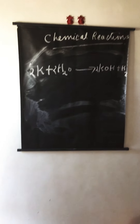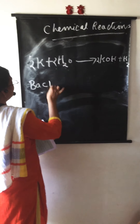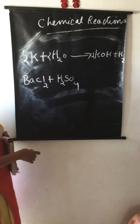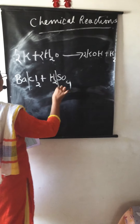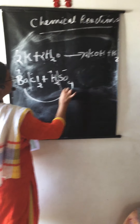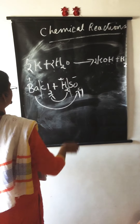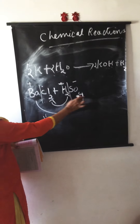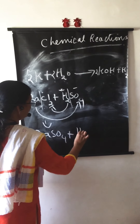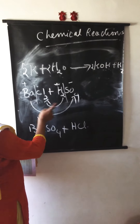Suppose the reaction involves barium chloride and sulfuric acid: BaCl2 + H2SO4. If you don't know the products, you can split each compound and mark the ions as positive and negative — plus will combine with minus. So barium (Ba2+) combines with sulfate (SO4 2-), and hydrogen (H+) combines with chloride (Cl-). The products are BaSO4 + HCl. So the equation is: BaCl2 + H2SO4 → BaSO4 + HCl.